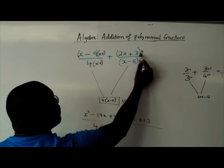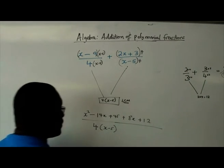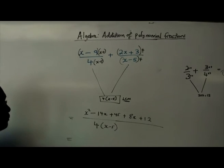8x plus 12. What I simply did, I did 4 times 2x, which is 8x. 4 times 3, which is 12. This will be equal to...